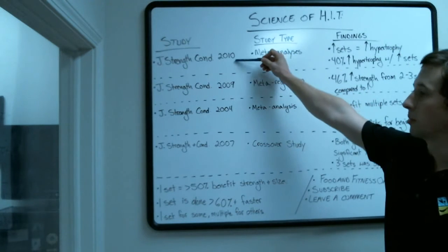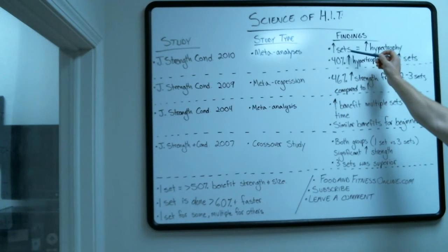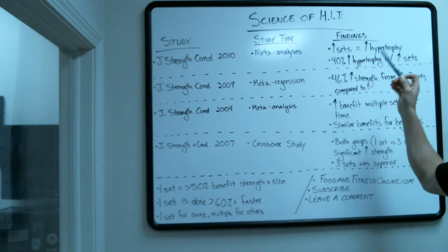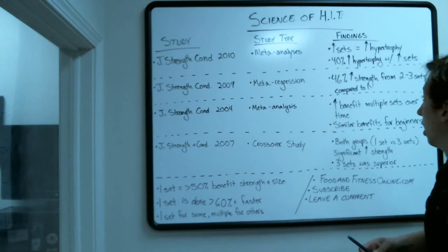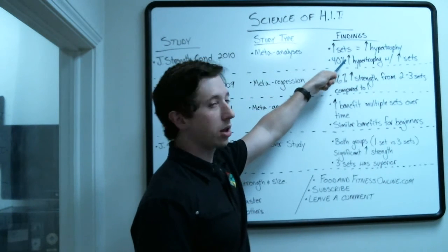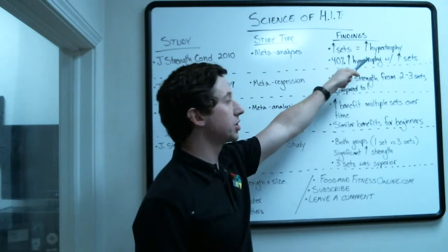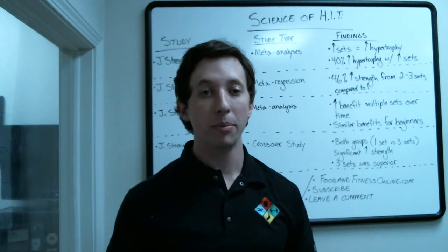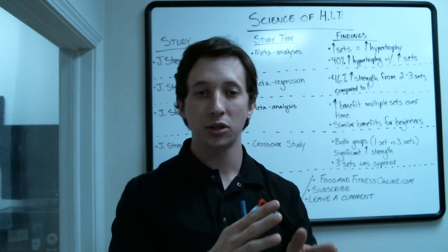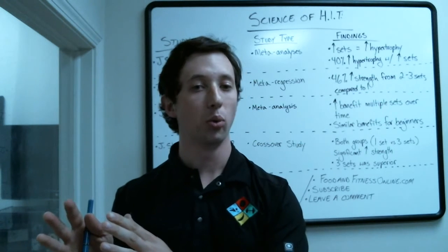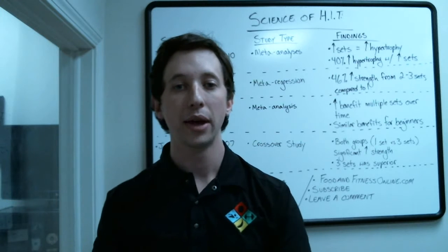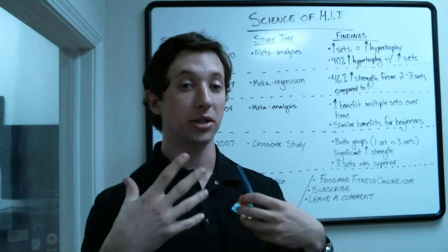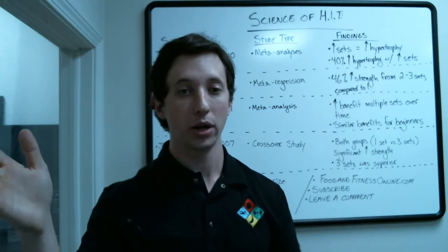So first of all, the findings from the Journal of Strength and Conditioning were that as you increase sets, you increase your hypertrophy. So this was a study looking at hypertrophy. Another thing they found was that there was a 40% increase in hypertrophy found with increasing the number of sets that you do beyond the first set. So the take-home message is that if you do more sets, you will see more hypertrophy. Hypertrophy is another word for muscular growth. More sets, more growth, and more sets were quantified to being 40% more effective than a single set. So you get about 60% of the benefit from the first set.